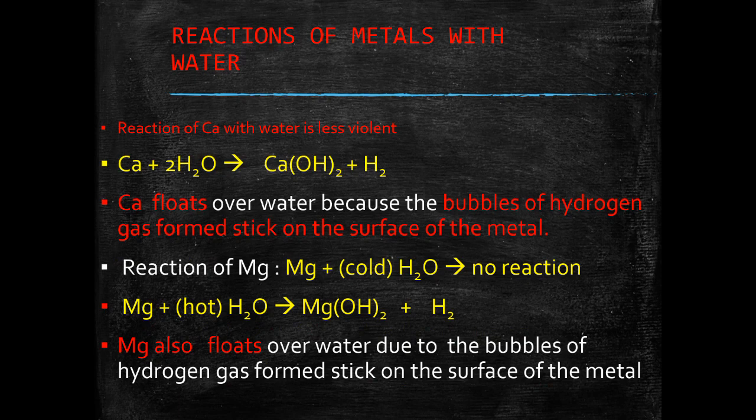When calcium reacts with water, it gives calcium hydroxide and hydrogen gas. Calcium floats over water because the bubbles of hydrogen gas formed stick on the surface of the metal.